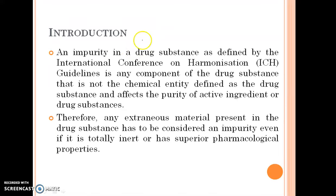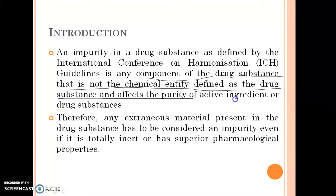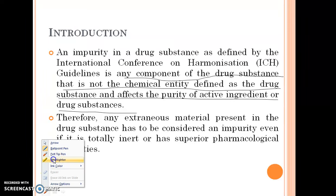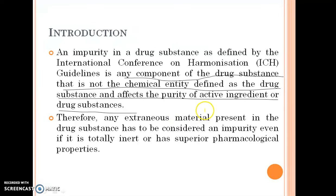In the introduction, we will discuss about what is impurity. An impurity in a drug substance, as defined by ICH guidelines — that is International Conference on Harmonization guidelines — is any component of the drug substance that is not the chemical entity defined as drug substance, and affects the purity of the active ingredient or drug substance. Any extraneous material present in the drug substance has to be considered an impurity, even if it is totally inert or has superior pharmacological properties.